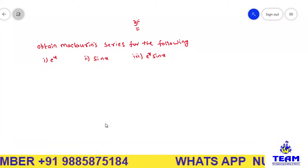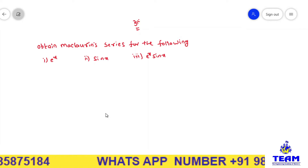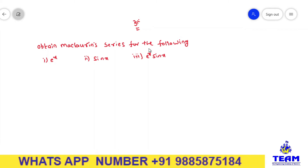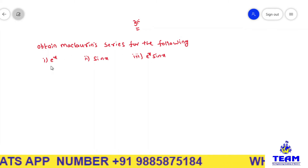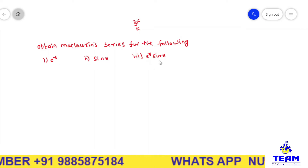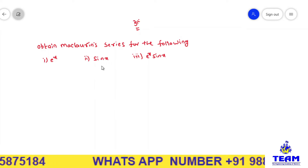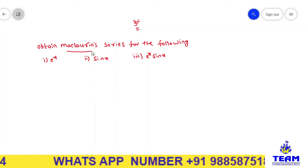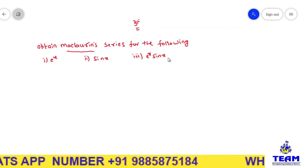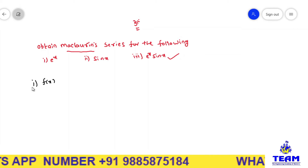Hi friends, in this video we are solving problems on functions of a single variable. The given problem is to obtain the Maclaurin series for the following functions: first is e^x, second is sin(x), third is e^x·sin(x). I am solving these problems by using Maclaurin's theorem, and later I will do e^x·sin(x) by a different method also.